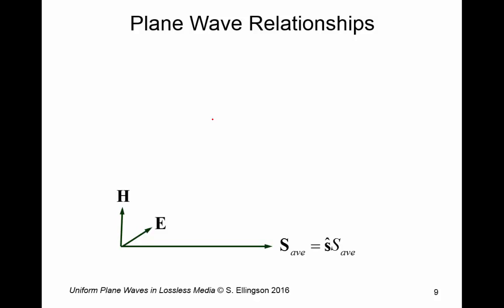We can summarize this in three equations, which are collectively known as the plane wave relationships. Again, the same picture here. But the plane wave relationships say that if you want H, you can get it from the direction of propagation in the electric field as follows. S cross E gives you the right vector that points in the H direction. And you simply divide by the impedance to get the magnetic field intensity.